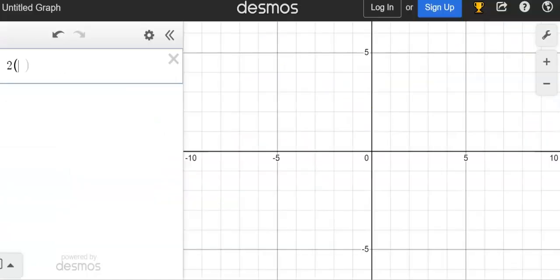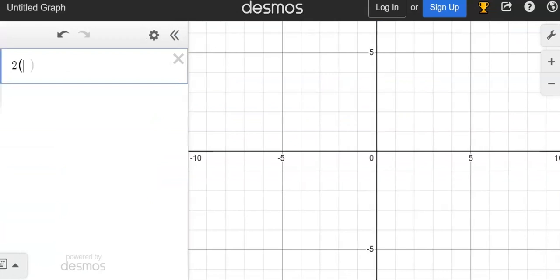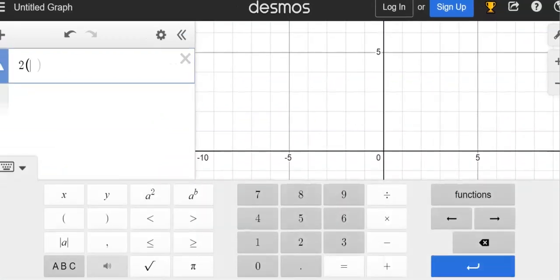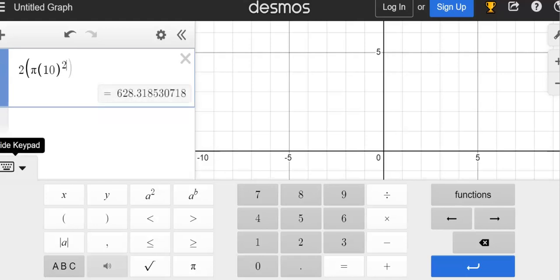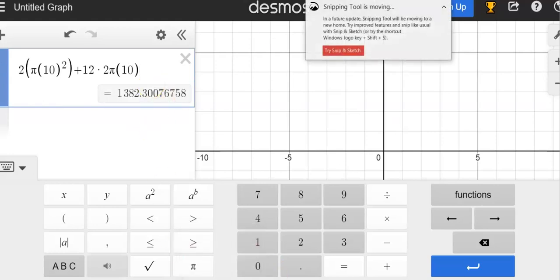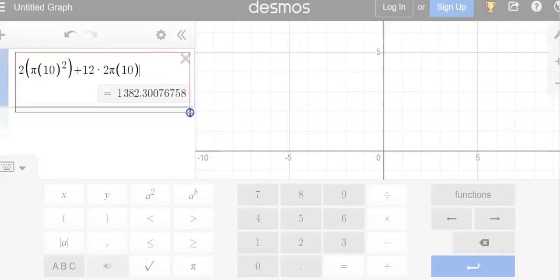So I've opened up Desmos, and then I'm going to type it in exactly the way that it looks. I'm going to hit the keypad down here. There's a pi button right there. And then parentheses 10 squared plus 12 times 2 pi 10. And we'll just round these to the nearest hundredths. So 1382.30. I'm going to just grab a screenshot of this.